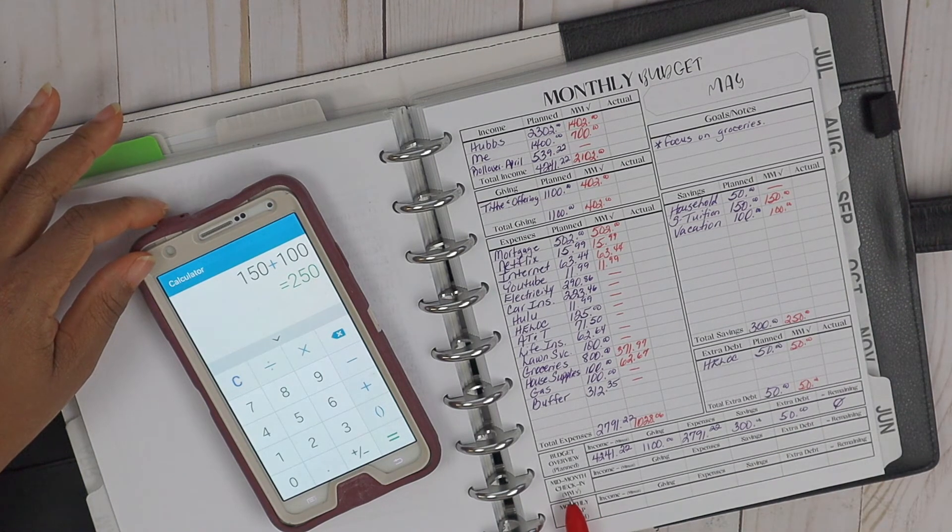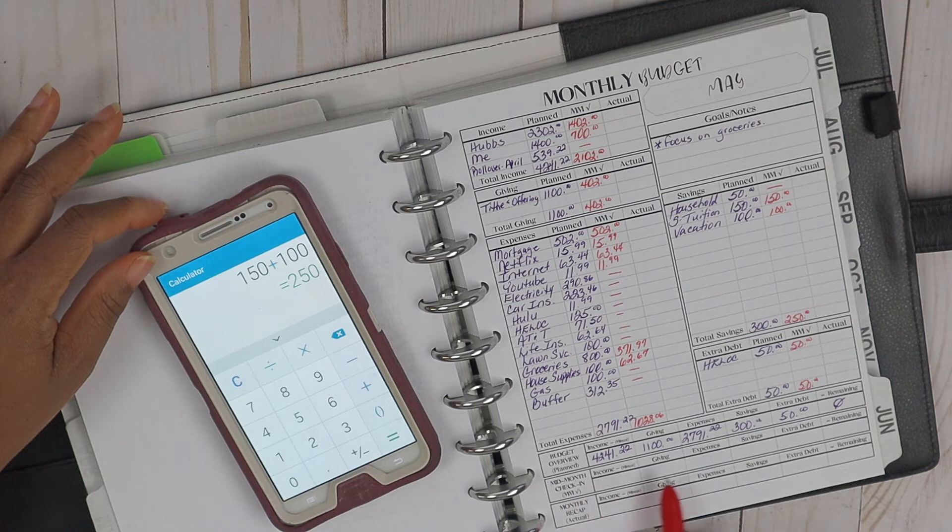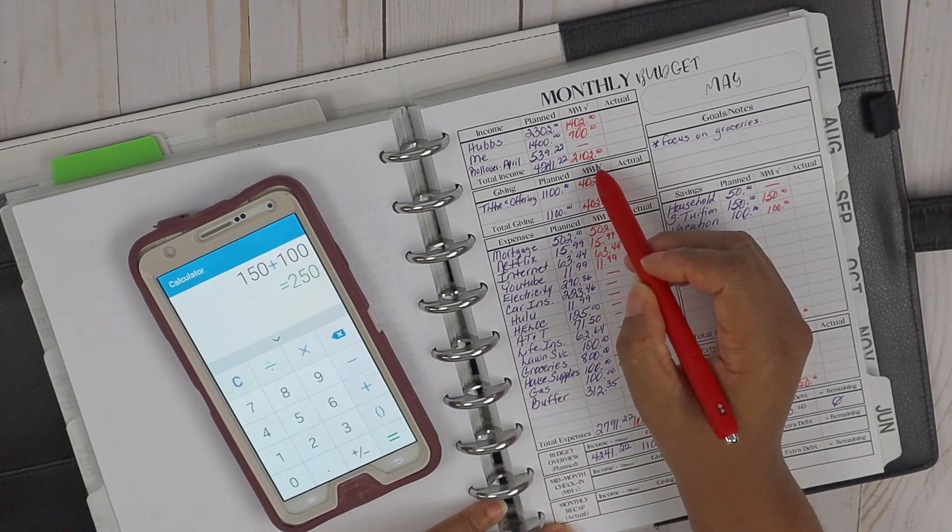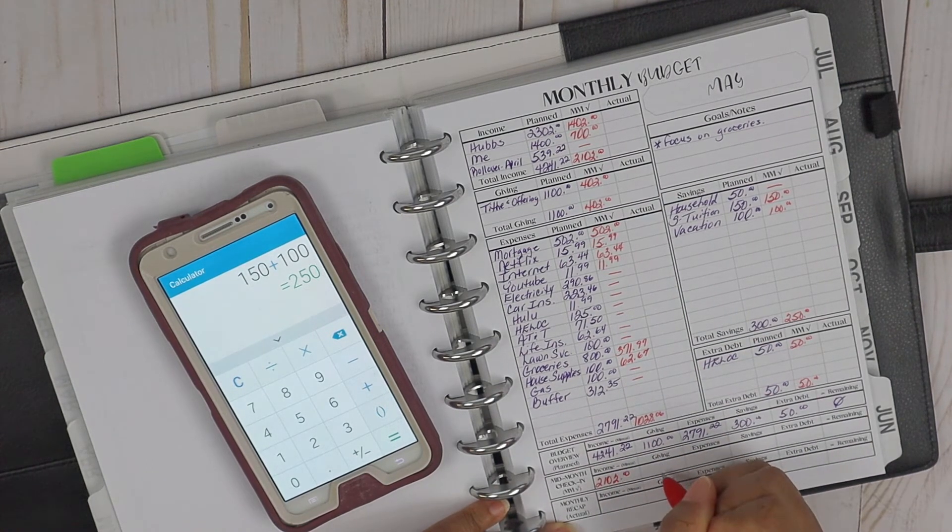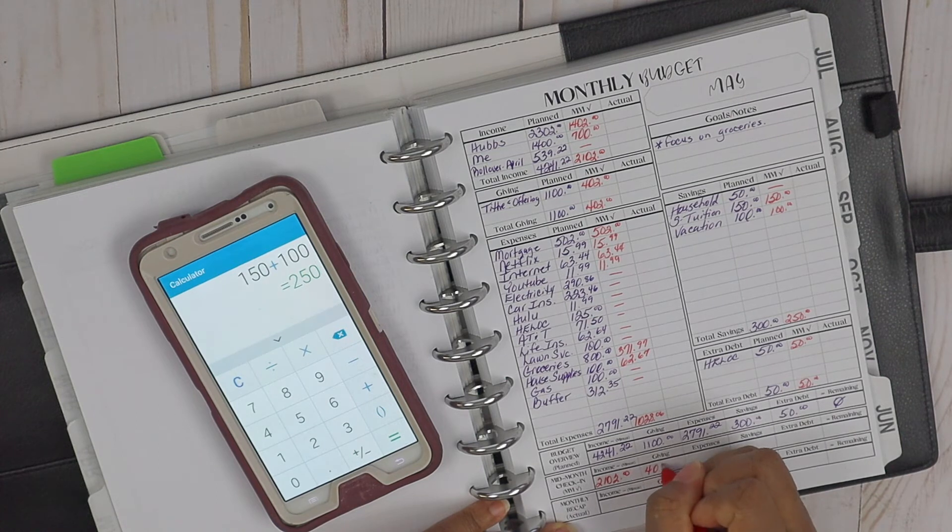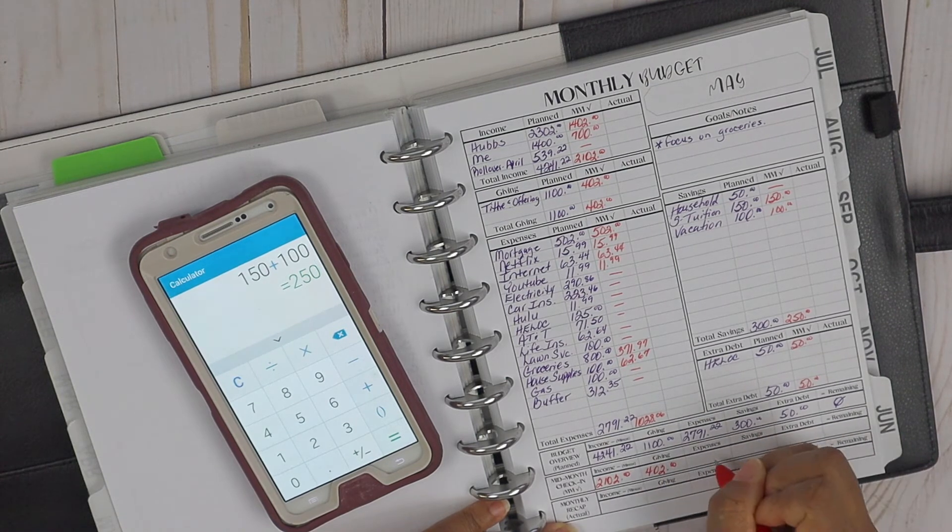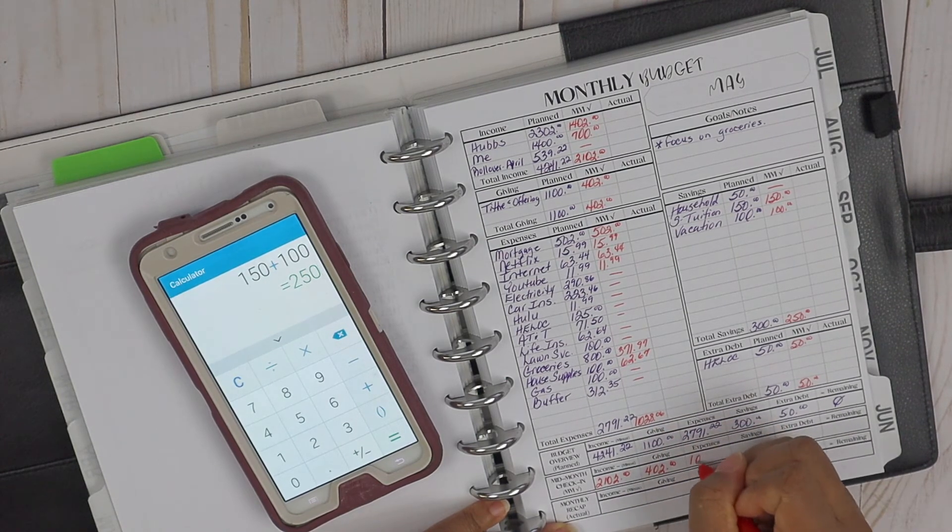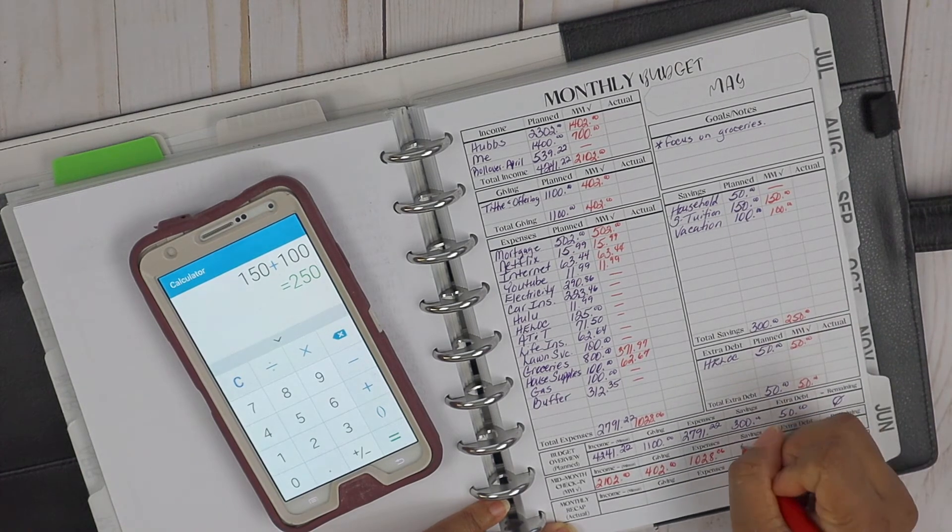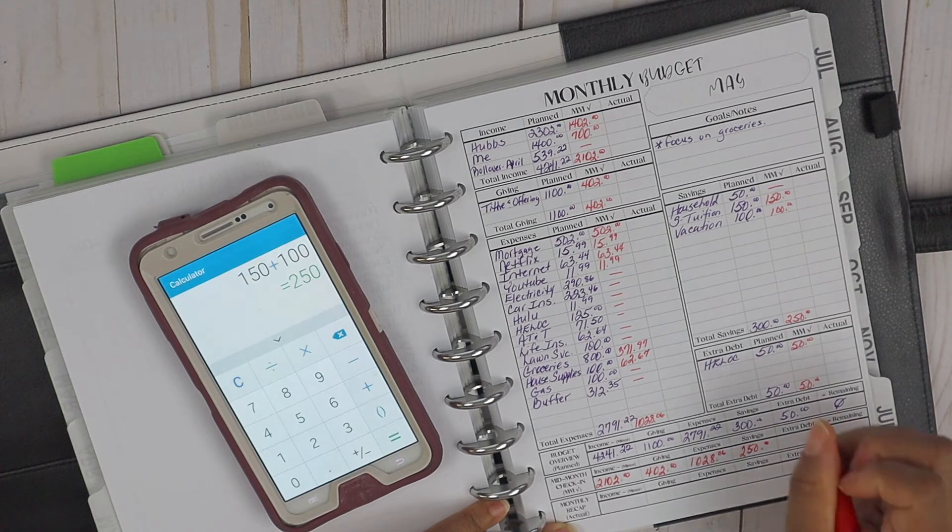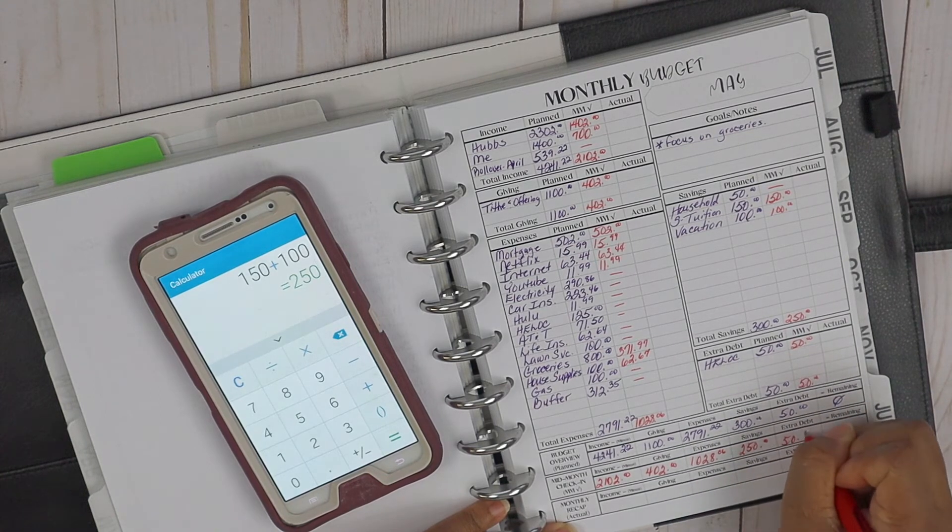So we can go ahead and fill in our mid-month check-in section down here on our budget worksheet. So right now it says income, we're at $2,102, and then the giving, we're at $402. And then our expenses came in at $1,028.06, and then the savings came in at $250, and our extra debt at $50.